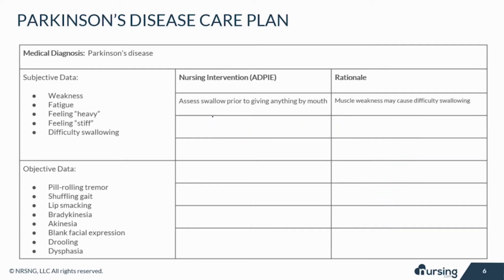You will assess the patient's ability to swallow before giving them anything by mouth to avoid aspiration, because their muscles are weak and it causes difficulty swallowing. Involve speech therapy as appropriate for interventions and assessments pertaining to the patient's abilities and inabilities regarding swallowing different foods and drinks.